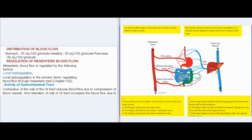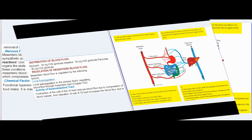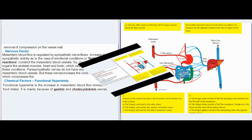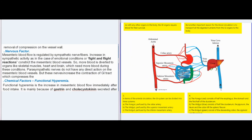Activity of the gastrointestinal tract also regulates mesenteric blood flow. Contraction of the wall of the GI tract reduces blood flow due to compression of blood vessels, and relaxation of the wall of the GI tract increases blood flow due to removal of compression on the vessel wall.